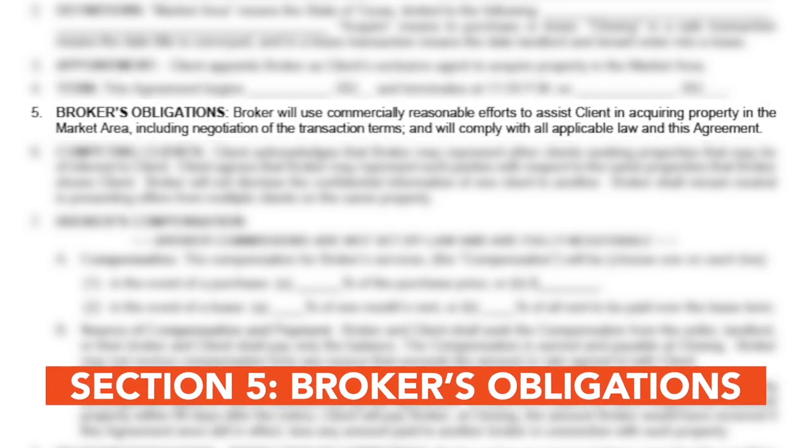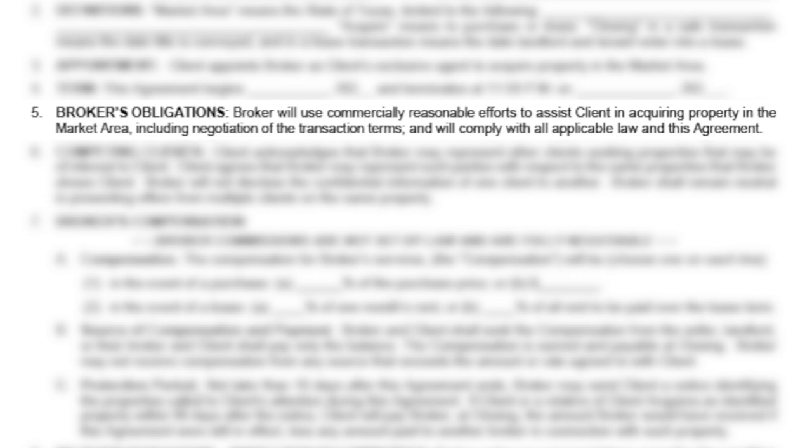The fifth section is broker's obligations. This section covers what a broker's responsibilities are as they serve buyers. That includes what you as an agent will do on behalf of your broker. If an exclusive agency agreement is signed, the broker will make every reasonable effort to fulfill that promise of agency.